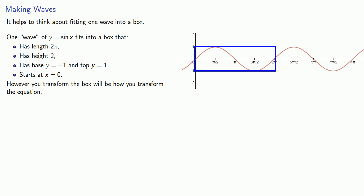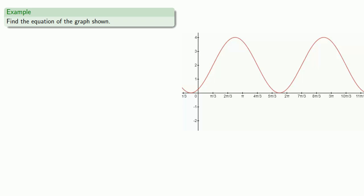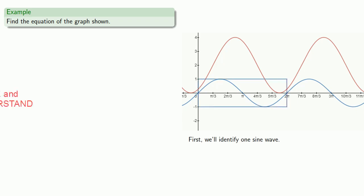It's easier to do stretches before translations. Since sine and cosine are just horizontal translations of each other, it doesn't really matter which one we start with, so let's use sine waves. First we'll identify what one sine wave looks like, and now let's try to fit one sine wave of our graph into a box.